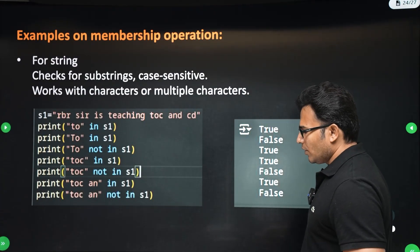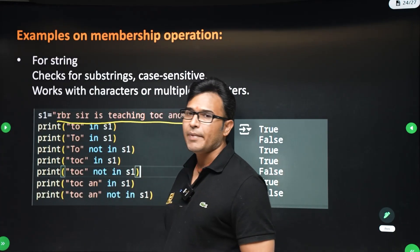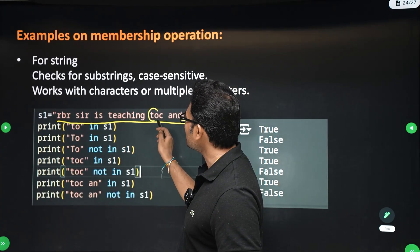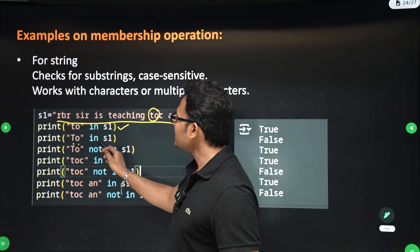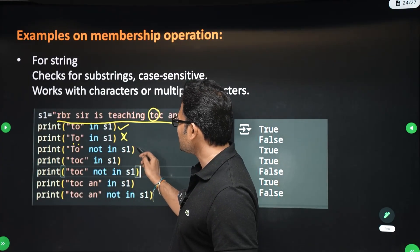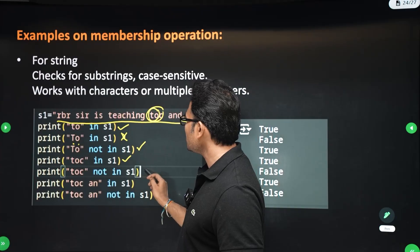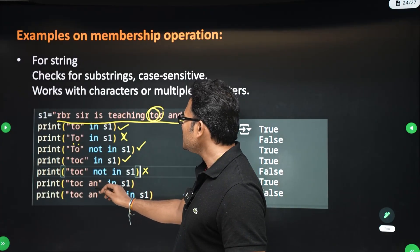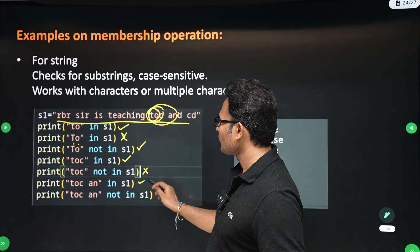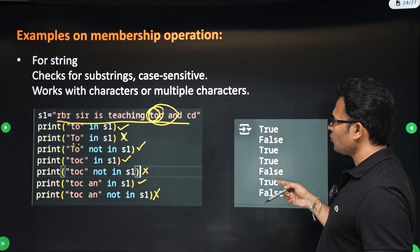Now let's look at a string. With a large string like 'RBR is teaching TOC and compiler design', you can take any substring and check for a match. 'to' in S1 — true. Capital 'TO' in S1 — false, it's case-sensitive. Capital 'TO' not in S1 — true. 'TOC' in S1 — true. 'TOC' not in S1 — false. 'TOCAN' in S1 — true. Likewise you will get true and false values.